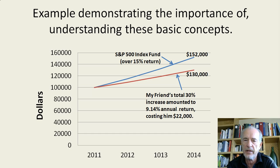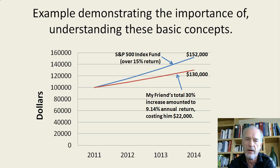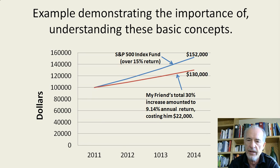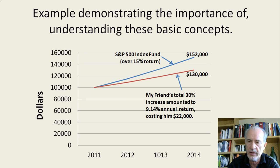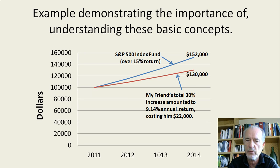Here's an example of why it's important to understand these basic concepts. A friend of mine not too long ago came to me who does not manage his own retirement account, but has an advisor running it for him, and he's quite happy and satisfied with this advisor. He mentioned to me that in the last three years his retirement fund has gone up by 30%, which really sounds pretty good. If he started with $100,000, he would now have $130,000 over three years. It turns out this is not a 10% annualized return, but only a 9.14% annualized return because this gets compounded annually. However, at that same time, over these last three years the S&P 500 index fund had about a 15% annualized return.